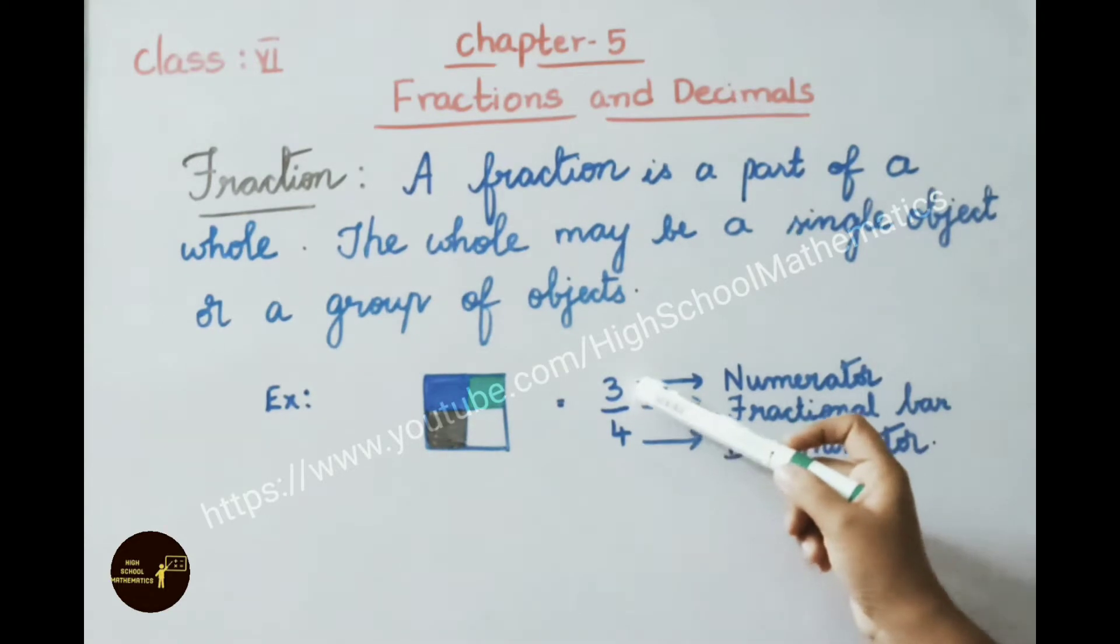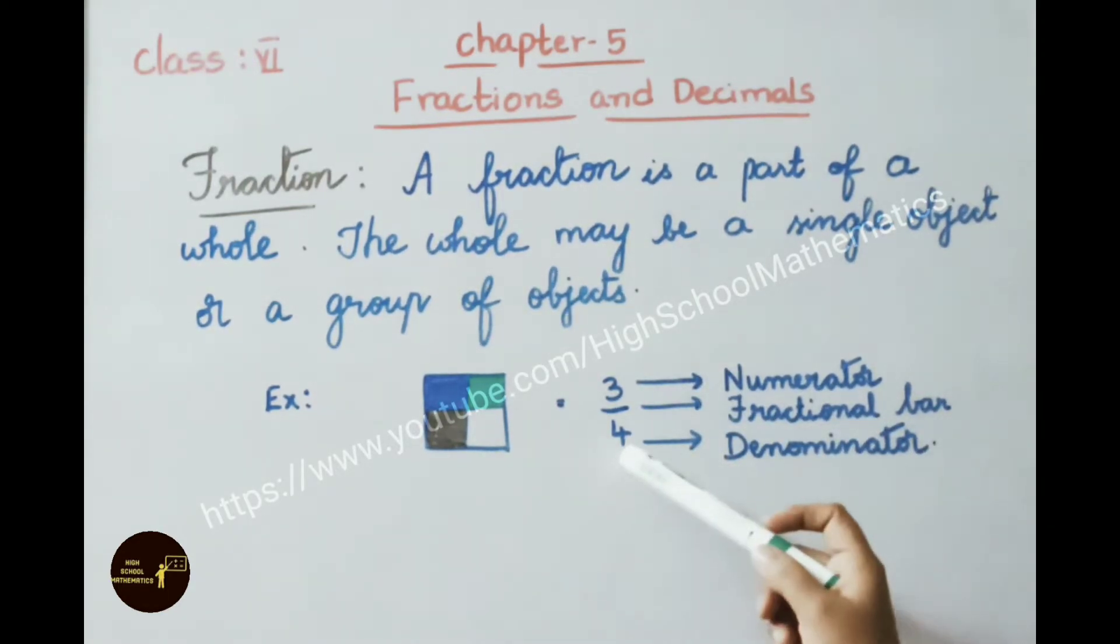Where 3 is called as numerator, that is the number above the fractional bar, and 4 is called as denominator. The number below the fraction bar is called as denominator and this line is called as fractional bar.